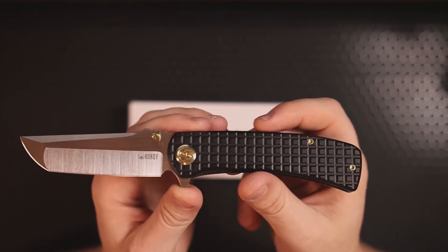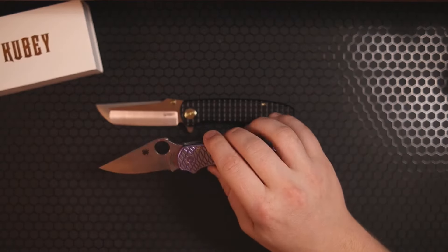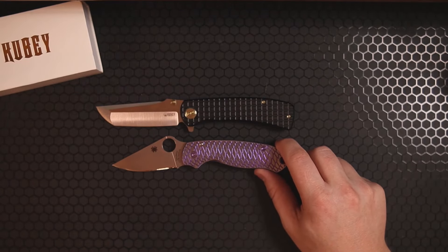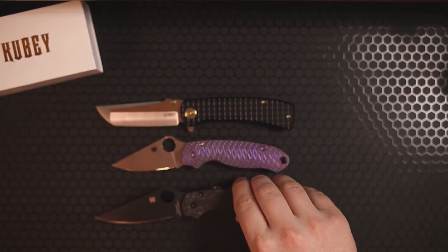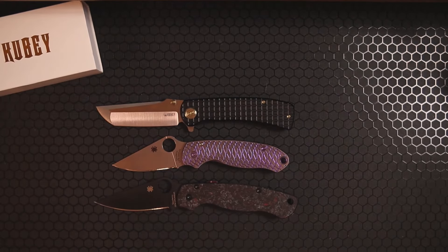Now if you're wondering how this compares to other knives that you might have in your inventory, here it is up against a Spyderco Para 3. As you can see it definitely dwarfs the Para 3. And then up against the Spyderco PM2 it is actually going to be more of the size of the Spyderco PM2.